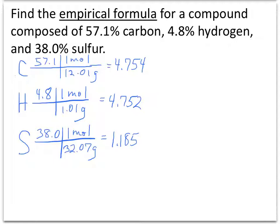This is an instance in chemistry when we want to go ahead and show extra decimal places in our answer. If we take the percentage for carbon, 57.1, and consider that to be a quantity in grams, we can divide by the molar mass for carbon of 12.01 and come up with a number, 4.754. Do the same thing for hydrogen and sulfur.